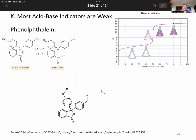Now, let's talk a little bit about indicators. Indicators are species that depending upon the pH, they change color. One of the most famous ones is phenolphthalein. It's colorless in acidic solution. It is pink in basic solution.